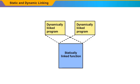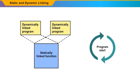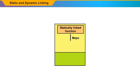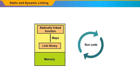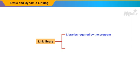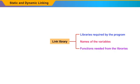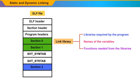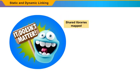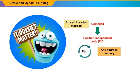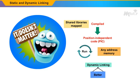That function is called when the program starts. This static function maps the link library into memory and runs the code. The link library defines the libraries required by the program and the names of the variables and functions needed from those libraries, by reading the information contained in sections of the ELF file. Then it maps the libraries into the virtual memory. It doesn't matter where these shared libraries are mapped because they are compiled into position-independent code (PIC), which can run at any address in the memory. Hence, dynamic linking is better than static linking.